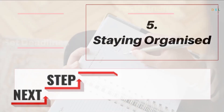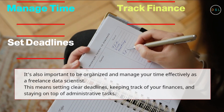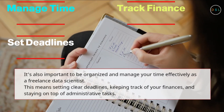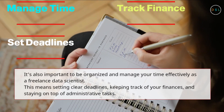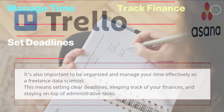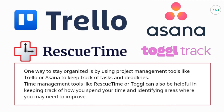Five: staying organized. It's also important to be organized and manage your time effectively as a freelance data scientist. This means setting clear deadlines, keeping track of your finances, and staying on top of administrative tasks. One way to stay organized is by using project management tools like Trello or Asana to keep track of tasks and deadlines. Time management tools like RescueTime or Toggl can also be helpful in keeping track of how you spend your time and identifying areas where you may need to improve.